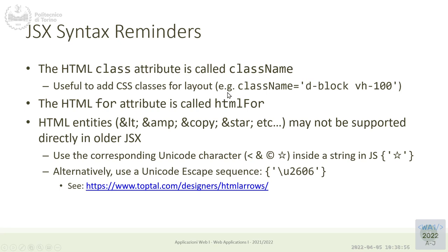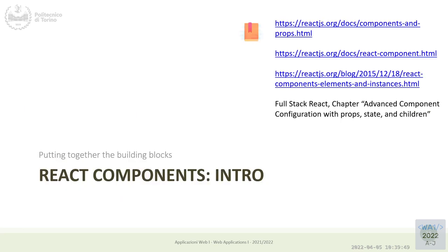Another detail: some attributes correspond to reserved words in JavaScript. For example, 'class' in HTML defines CSS classes, but 'class' is a keyword in JavaScript, so it cannot be used — we use 'className' instead. Also 'for', which is an attribute in HTML for mapping a label to an input element, is a keyword in JavaScript, so it's translated to 'htmlFor'. These are the little differences that make JSX code slightly different from the corresponding HTML code.